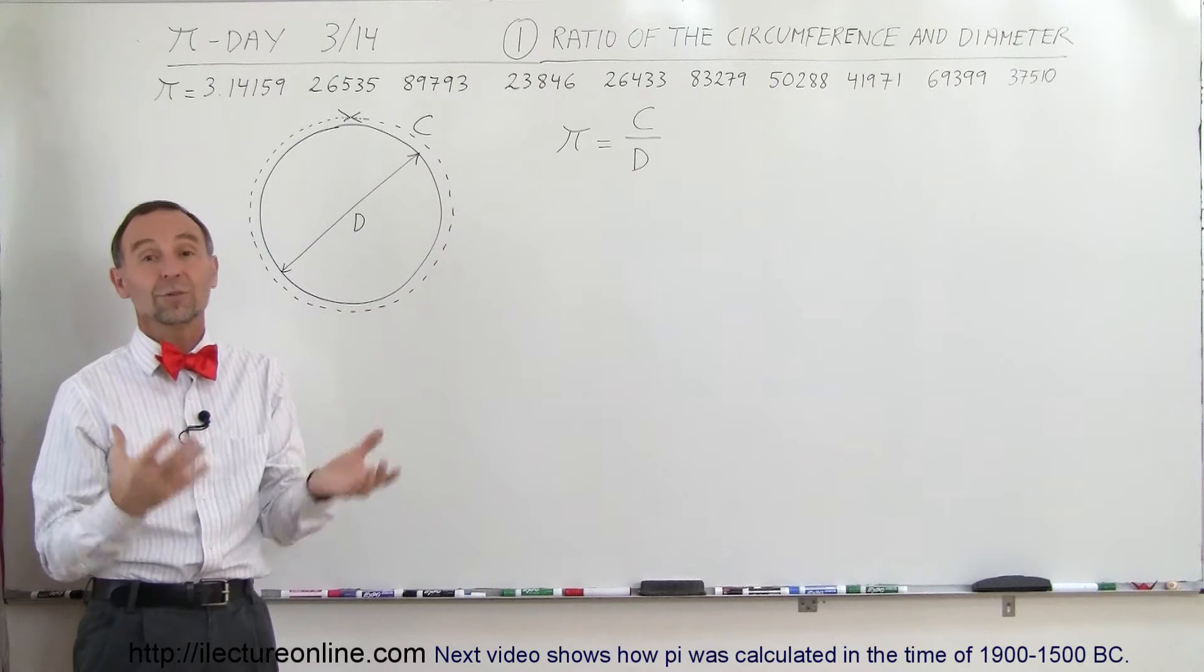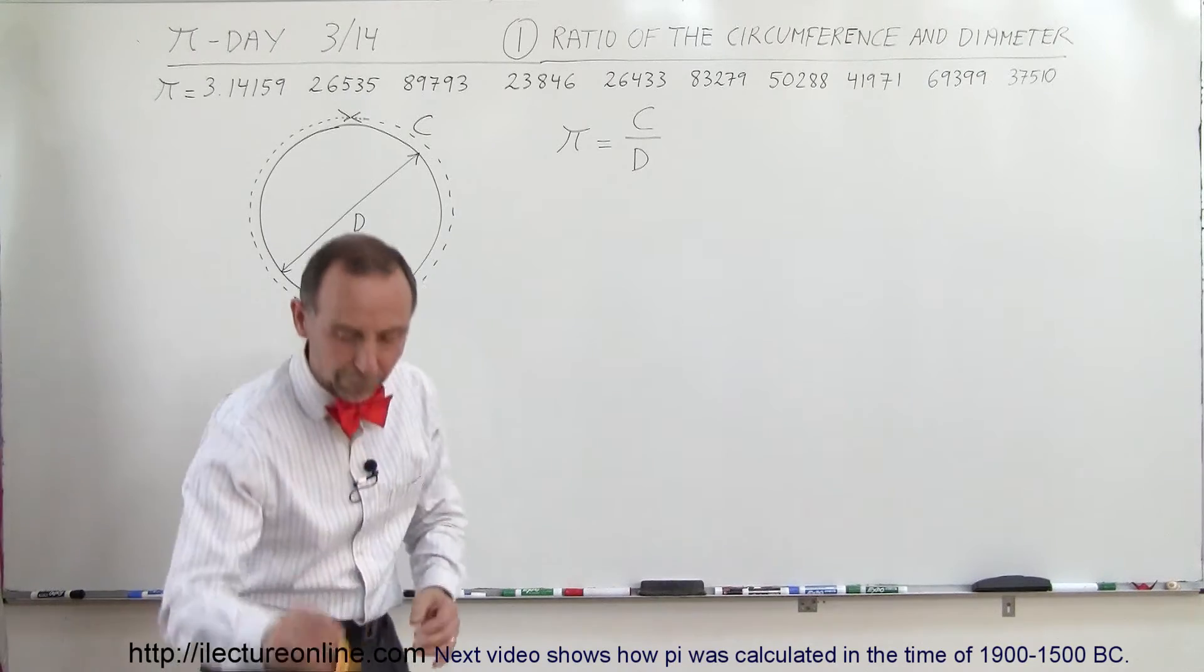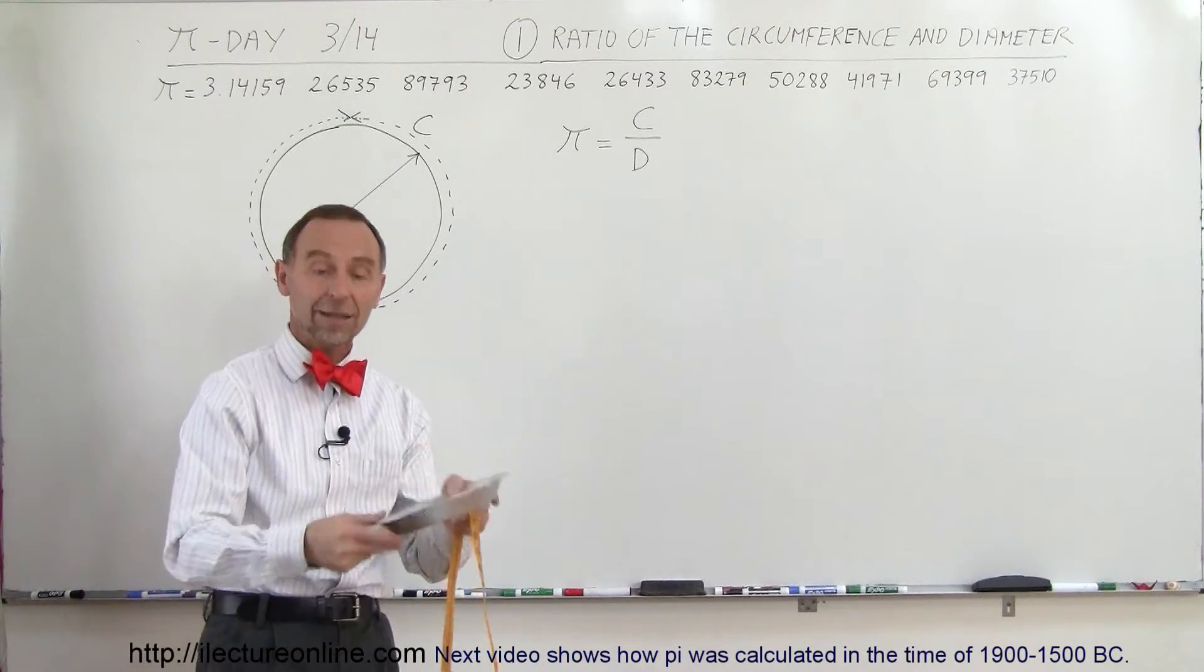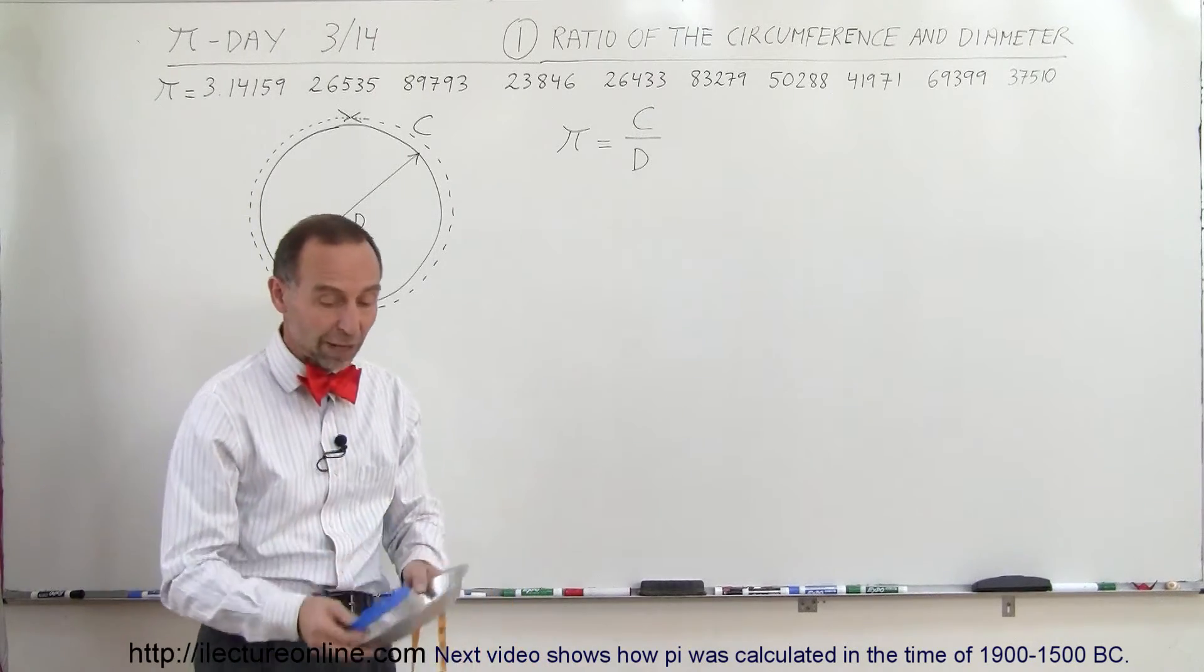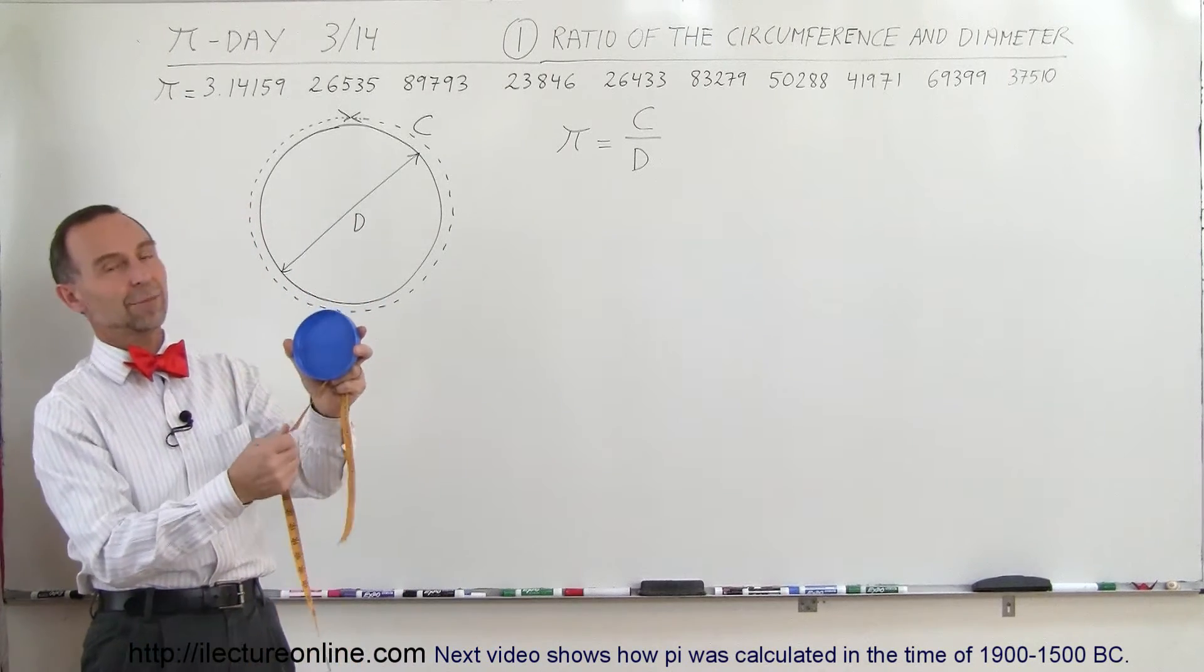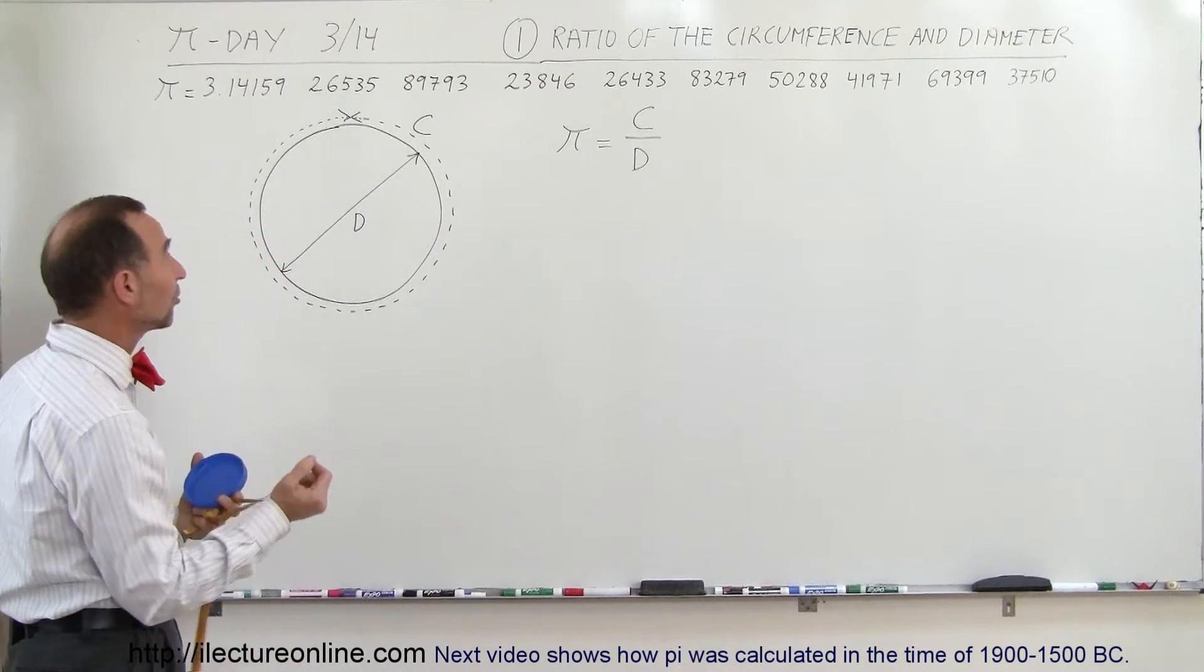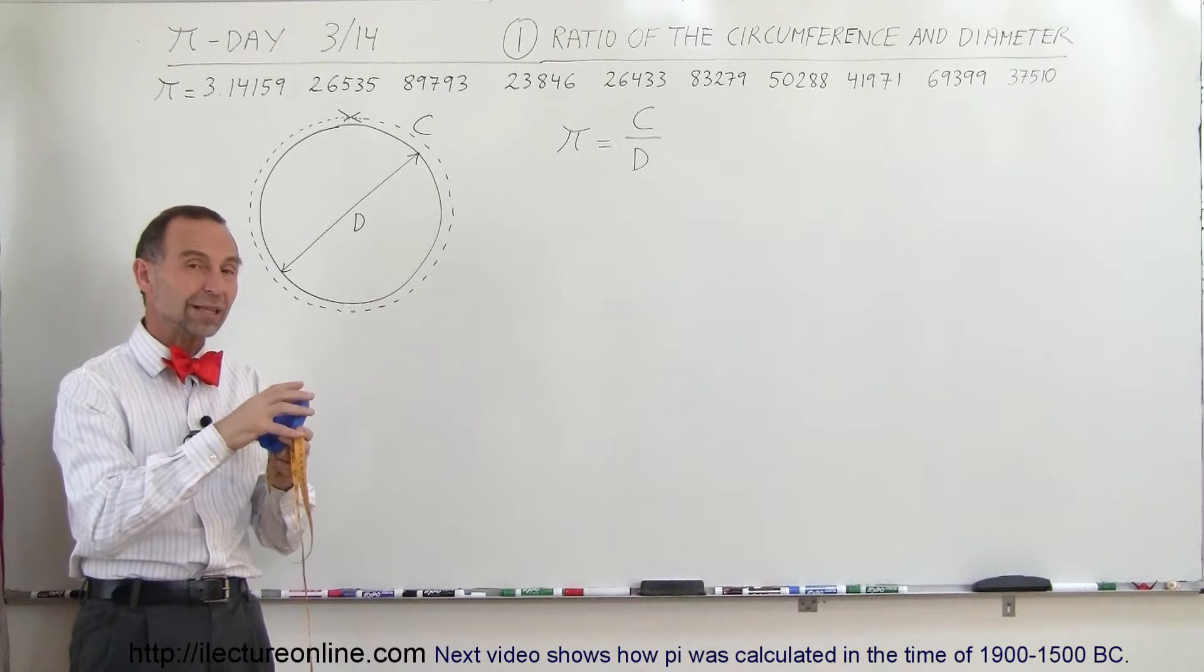But for us, can we find pi to a reasonable number of decimal places using everyday common things that we have at home, like a tape measure, and maybe a pie pan or the lid of a jar? What we have to do is simply measure the circumference of one of these very common household items and the diameter, and then we can figure out pi for ourselves. Let's see how accurate we can get things by measuring something as simple as this.